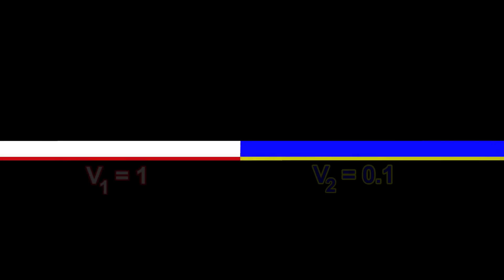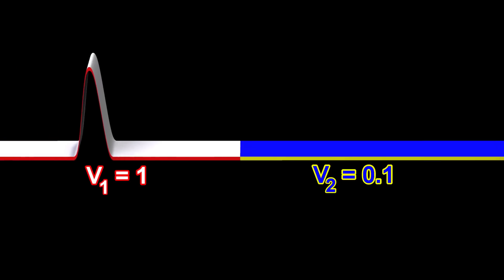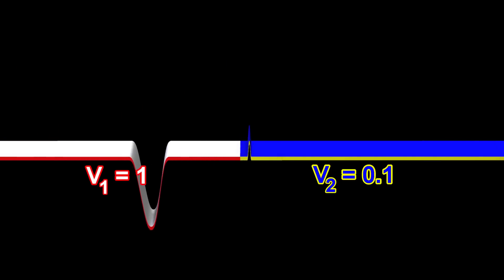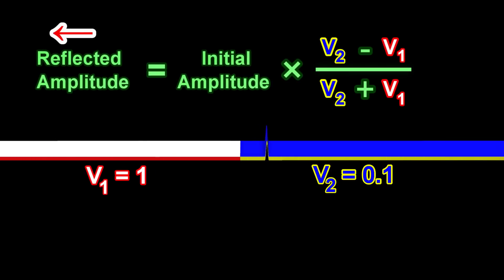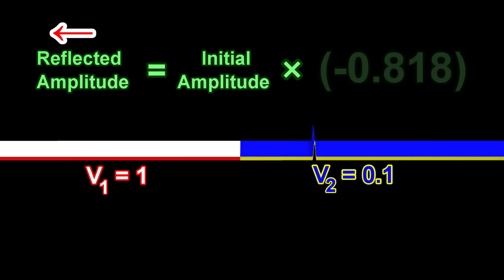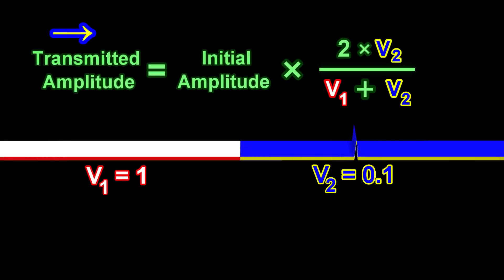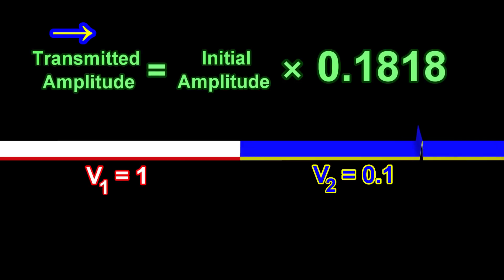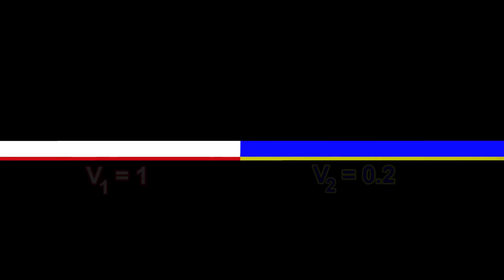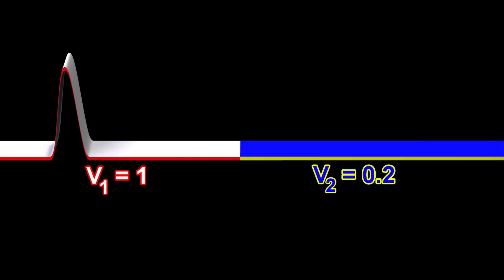Let us consider a scenario where V1 is still equal to 1, but we increase V2 to slightly above zero. Let us consider another scenario where V1 is again equal to 1, but V2 is slightly higher than in the previous scenario.